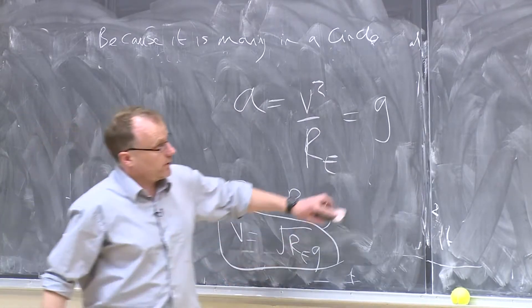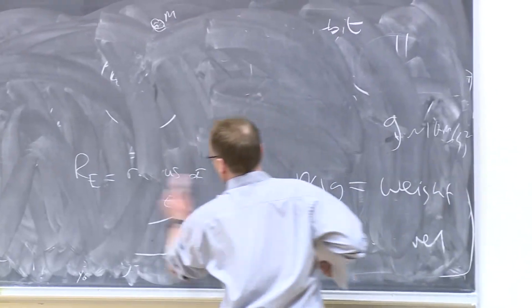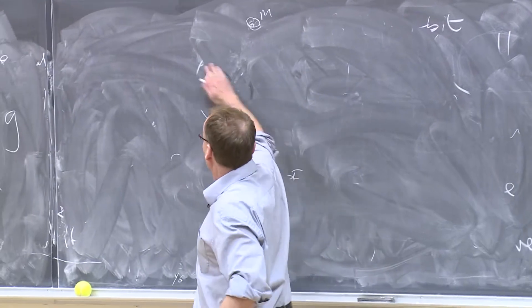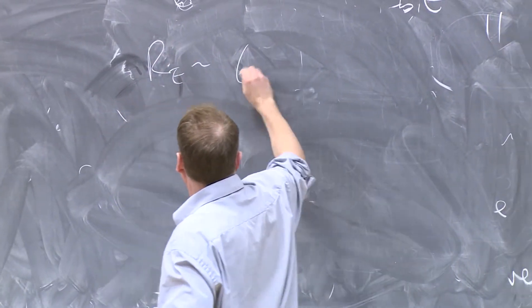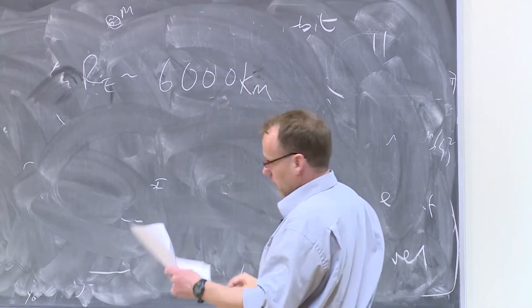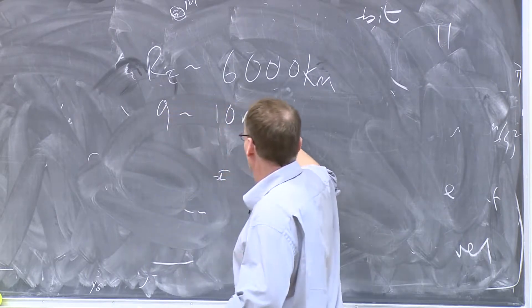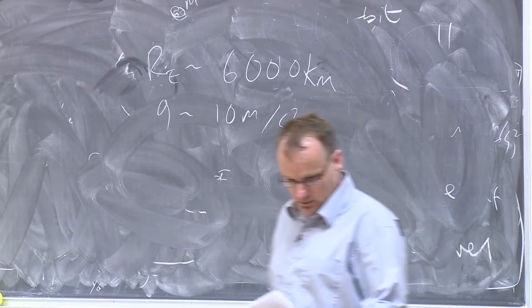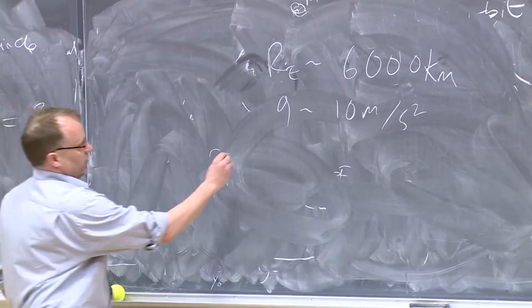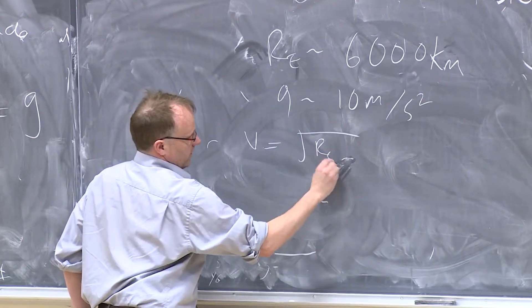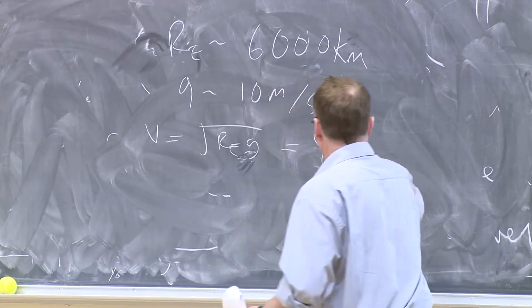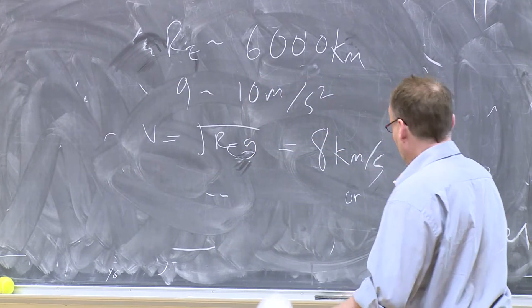And if you put in some values, so the radius of the Earth is about, I think we said it was 6,000 kilometers. G is about 10 meters per second squared. So if you put those numbers in, you end up with V equals square root of RE G, which is about 8 kilometers per second or 18,000 miles per hour.